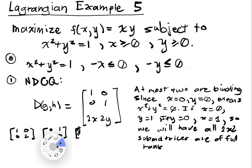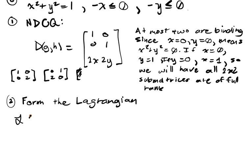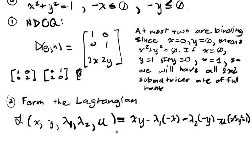In both of these cases, I have full rank. So the second step is to form the Lagrangian. I have x, y, 2 inequalities and 1 equality, so let's call that mu. This is going to be equal to xy minus λ₁(-x) minus λ₂(-y) minus μ(x² + y² - 1), which simplifies to xy + λ₁x + λ₂y - μ(x² + y² - 1).